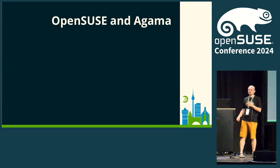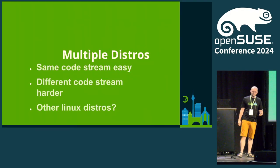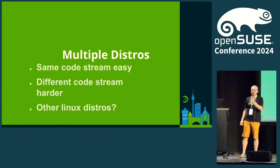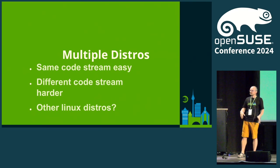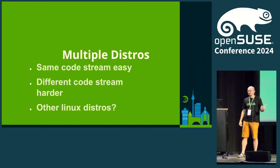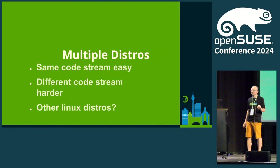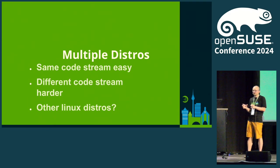Now let's start with questions specifically about Agama. What Agama can do is install multiple distributions. You already saw it in Ankur's presentation or even in Lubos' talk about Leap 16, where he created an Agama ISO that can install Leap 16 together with Tumbleweed and Micro OS. For the same code stream this is quite easy, but for different code streams it starts to be harder because of the software stack.